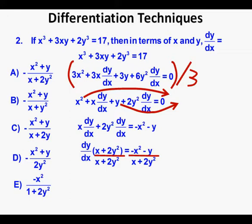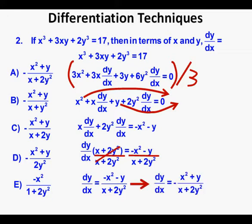We cancel x plus 2y squared on the left to equal 1, leaving dy/dx equals negative x squared minus y over x plus 2y squared. Factoring the negative from the numerator gives us negative times quantity x squared plus y, all over x plus 2y squared. That's answer choice A — we circle it as correct. Here we used the power rule in conjunction with the product rule to arrive at our answer.